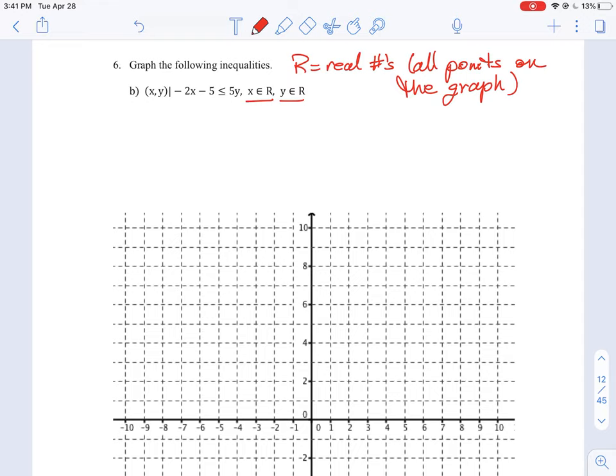Rewriting this equation, we're going to flip things around so it's going to be 5y is greater than or equal to negative 2x minus 5. That's our first step.